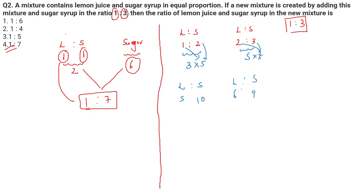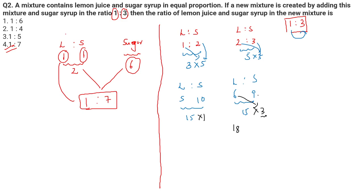So I multiply the first by five and the second by three to make the total quantity the same — both become 15. First mixture: lemon becomes 5, sugar becomes 10. Second mixture: lemon becomes 6, sugar becomes 9. Now since I'm taking one part of the first and three parts of the second: from the second, lemon becomes 6×3=18 and sugar becomes 9×3=27; from the first, lemon is 5×1=5 and sugar is 10×1=10. Total lemon: 18+5=23, total sugar: 27+10=37.